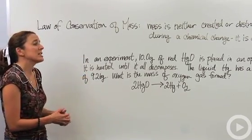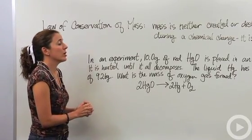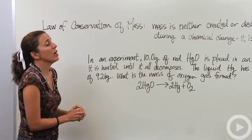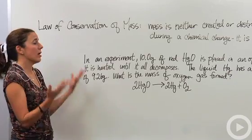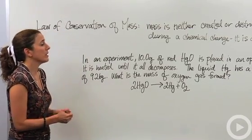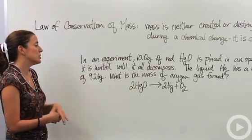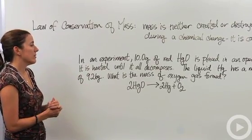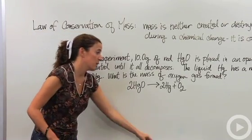In an experiment, 10.0g of red HgO is placed in an open flask. It is heated until it all decomposes into its elements, mercury and oxygen. The liquid mercury has a mass of 9.26g. What is the mass of oxygen gas formed?